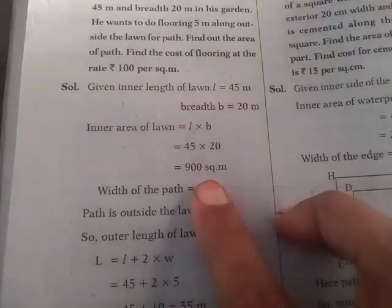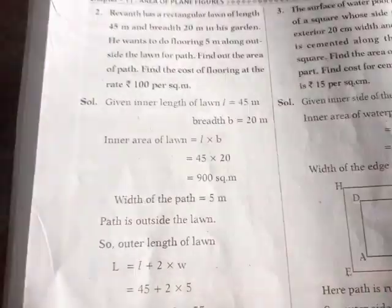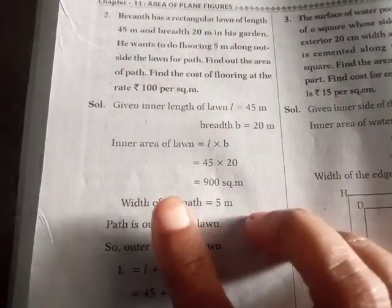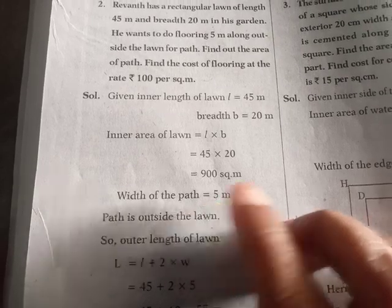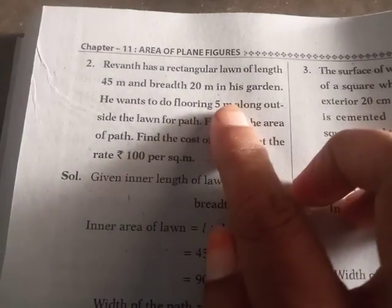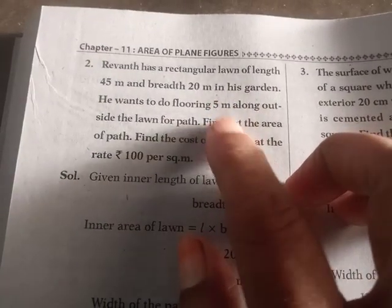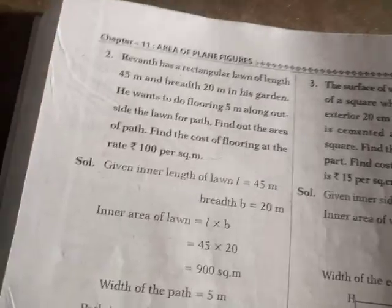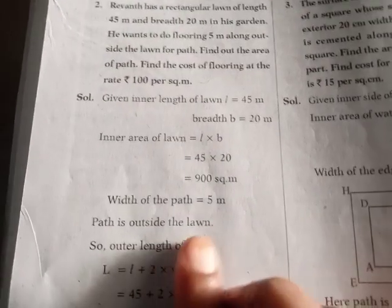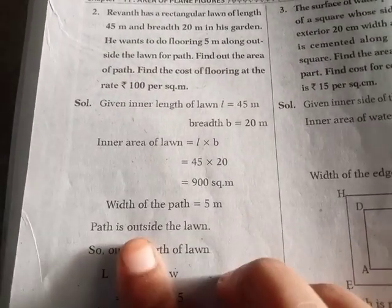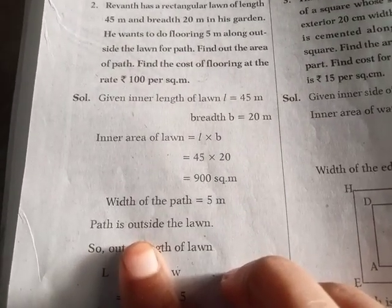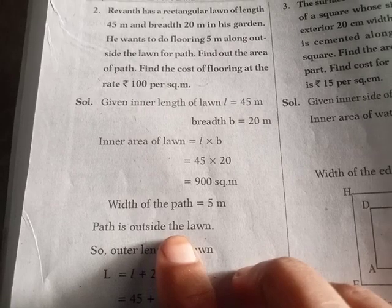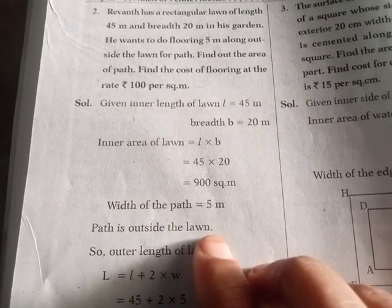So inner area equals 900 square meters. The width of the path is equal to 5 meters. The path is outside the lawn.